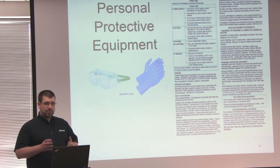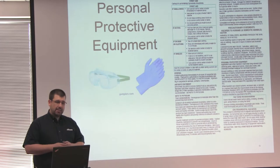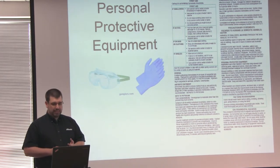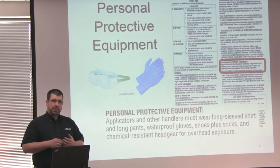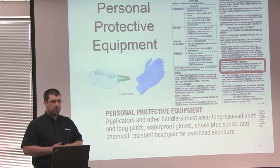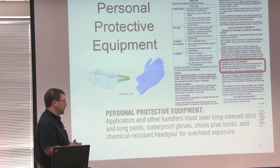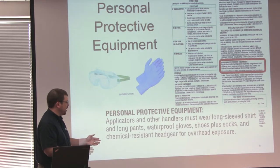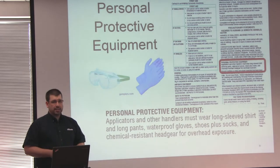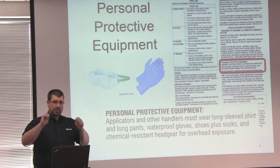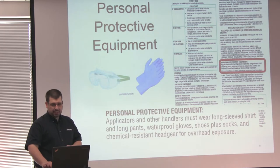To prevent exposure to the pesticide, every label has a section on personal protective equipment, or PPE. The PPE statement lists all the equipment that you need to be wearing when you're applying the pesticide. For Sevin, you must be wearing long sleeve shirts, long pants, waterproof gloves, shoes plus socks, and chemical resistant headgear if you're working overhead — such as if you're working on your boom above your head, or if it's in an irrigation system.